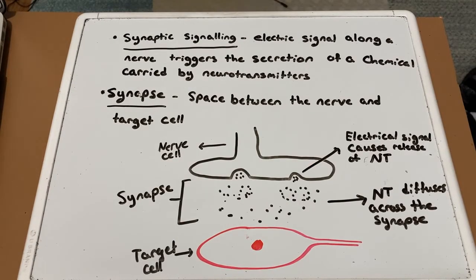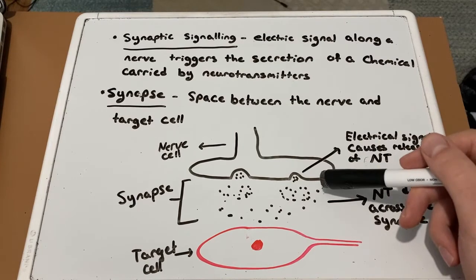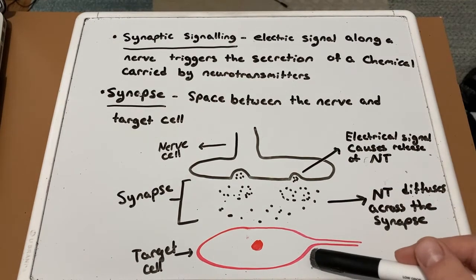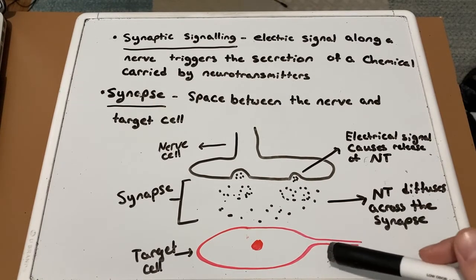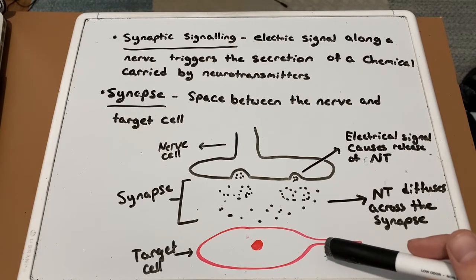Another type of local signaling is synaptic signaling, which occurs in the animal nervous system. An electric signal along a nerve triggers the secretion of chemicals carried by neurotransmitters. These neurotransmitters then diffuse across the synapse, which is the space between the nerve and the target cell — usually another nerve cell. When the neurotransmitter reaches the target cell, it triggers or stimulates that cell. This signal can either continue along another nerve cell or cause a reaction, such as directing the body to move an arm or fingers.